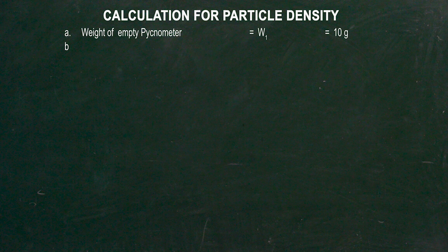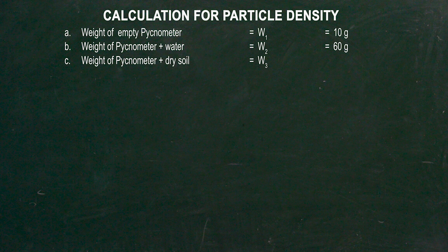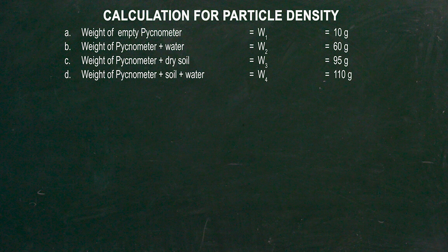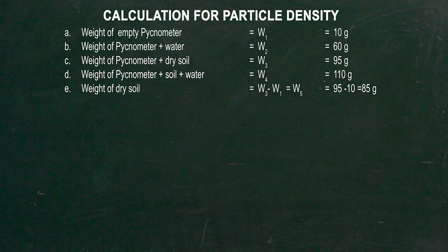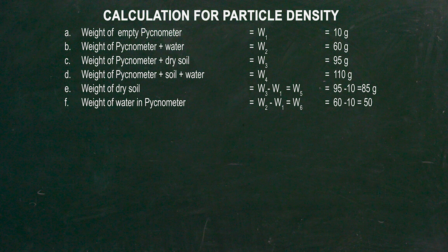The calculation part for particle density. Weight of empty pycnometer W1 is say 10 grams. Weight of pycnometer plus water W2 is say 60 grams. Weight of pycnometer plus dry soil W3 is say 95 grams. Weight of pycnometer plus soil plus water W4 is say 110 grams. Weight of dry soil: W5 equals W3 minus W1, that is 95 minus 10, equals 85 grams. Weight of water in pycnometer: W6 equals W2 minus W1, that is 60 minus 10, equals 50 grams.